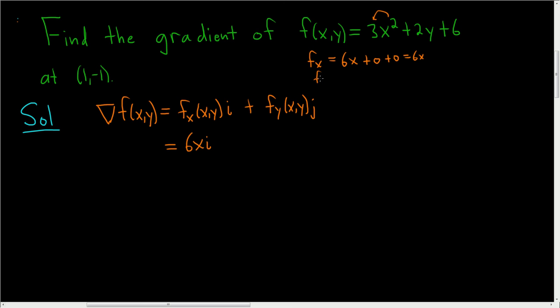If we take the partial derivative with respect to y, the derivative of this piece is 0. The derivative of 2y is just 2, and the derivative of 6 is 0. So we just get 2, giving us plus 2j.